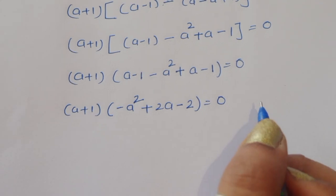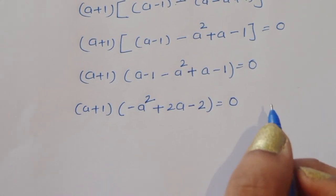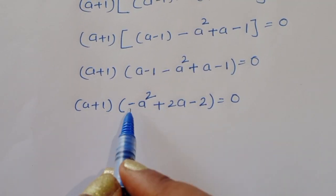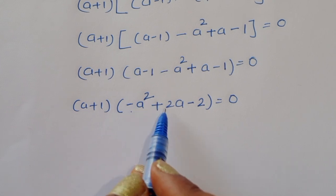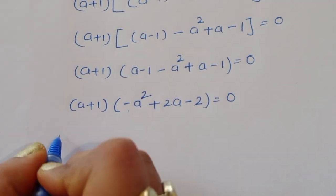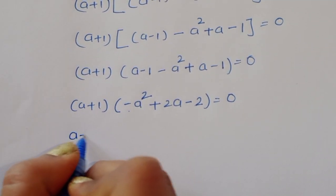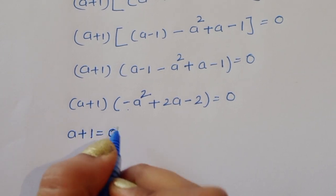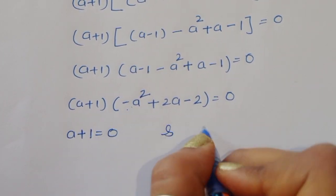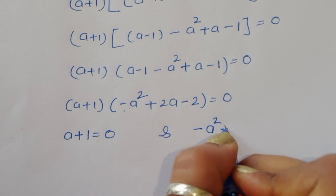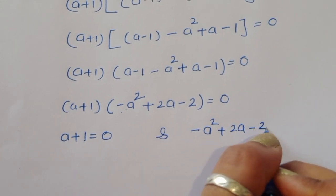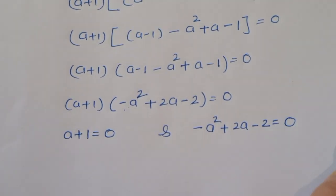Simplifying inside the bracket: a minus 1 minus a squared plus a minus 1 gives us minus a squared plus 2a minus 2. So we have (a + 1)(minus a squared plus 2a minus 2) is equal to 0. This gives us two equations: first, a + 1 = 0, and second, minus a squared plus 2a minus 2 = 0.